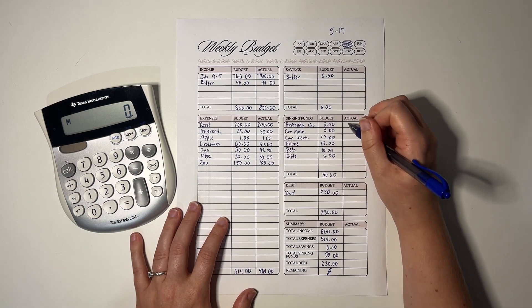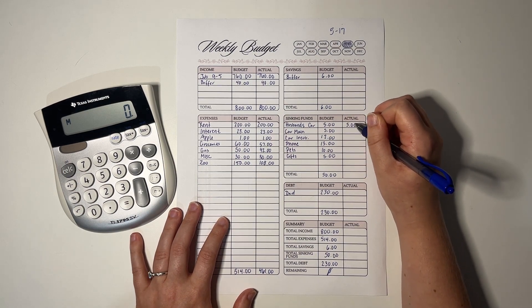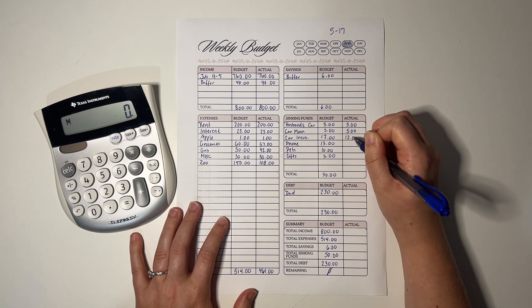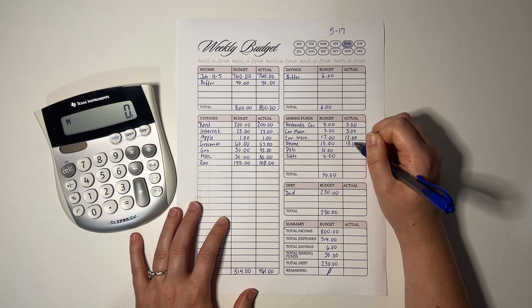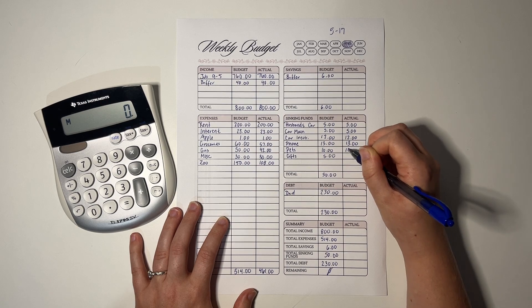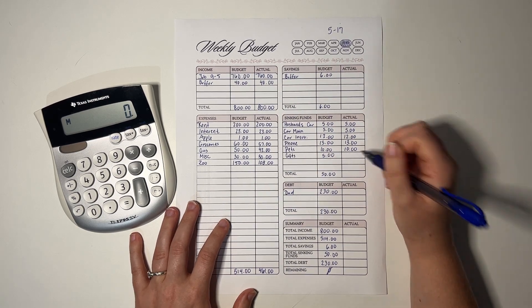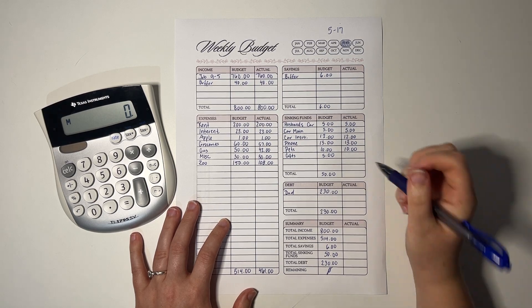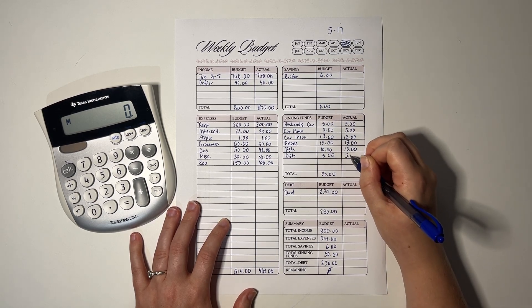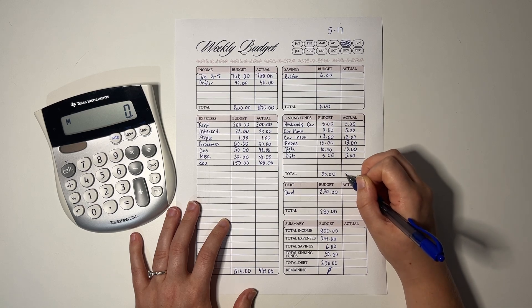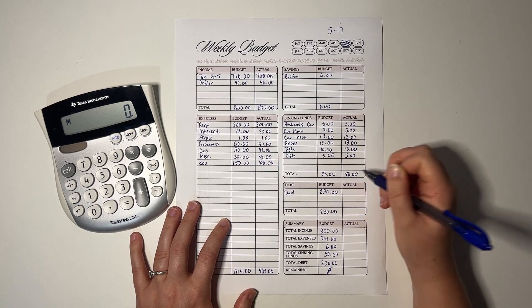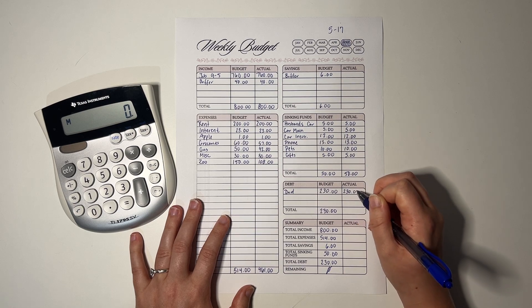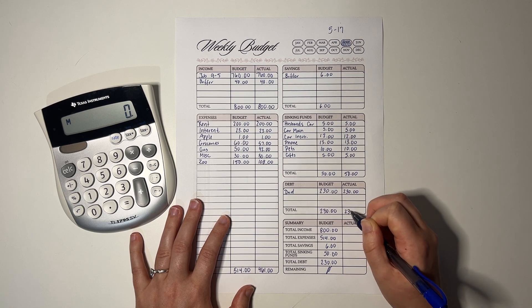All of the sinking funds were put into this week. $5 for each of our car maintenance funds, $12 for car insurance, $13 for the phone bill, $10 for our pet fund, which we took out of this weekend because we had to buy flea medicine and lights for the lizards. We did it, finally. And we'll be taking out of it this next week as well because we need to buy some more cat food. The dad fund got $230. This will be finished up next week, which is just super duper exciting.